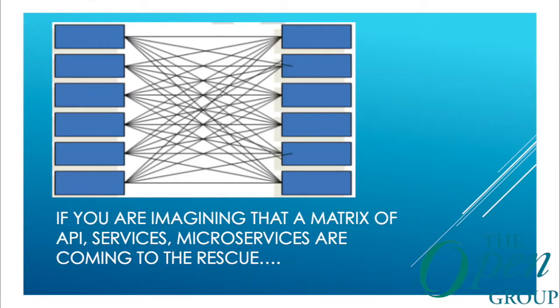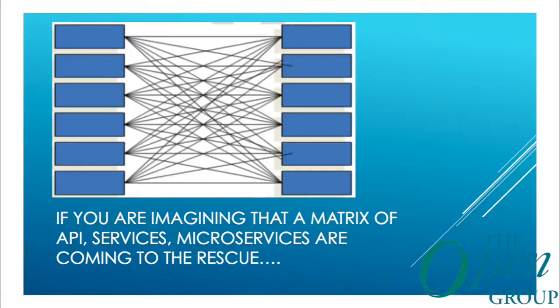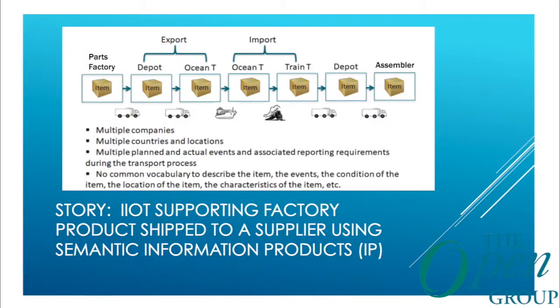Does anyone think all the problems in the world would be solved with API services and microservices? Not really — imagine drawing that same map for 40,000 applications. How silly would that be? All vendors say it's all about APIs and microservices, but we all know that's not the case. For the rest of this slide deck we're going to cover a story — a journey about industrial IoT supporting factory products shipped to a supplier using semantic information products.